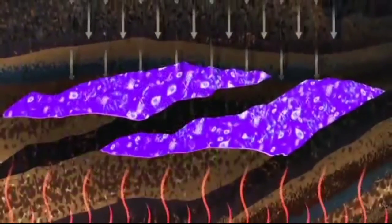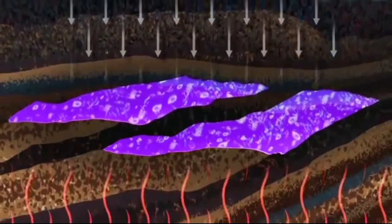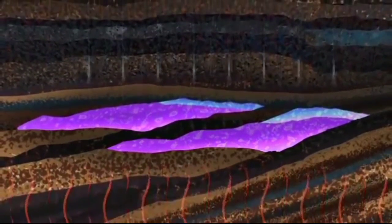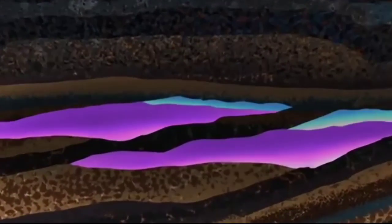Under heat and pressure, kerogen gradually changes into oil or gas. The whole process usually takes at least a million years.